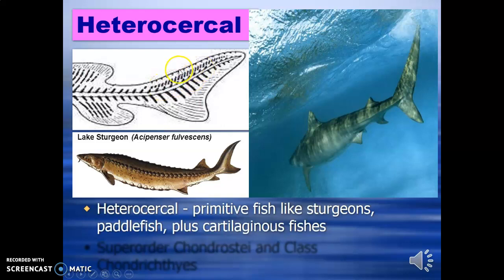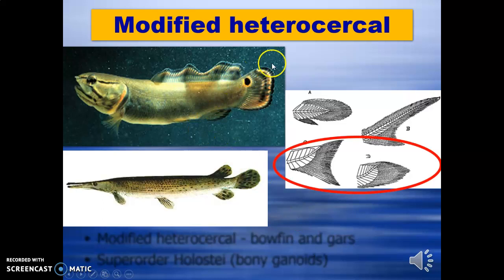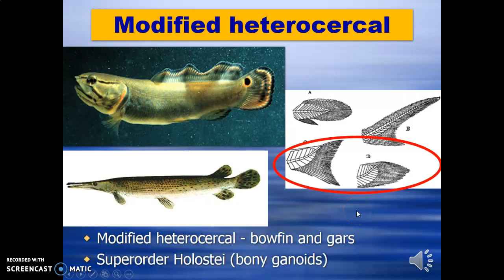Primitive fishes like sturgeon and paddlefish, which are cartilaginous, show the heterocercal tail where the tail lobe is extended towards the dorsal end, while the ventral lobe is shorter — examples include superorder Chondrostei and subclass Chondrichthyes. Modified heterocercal is also seen — here the tail bone is extended towards the top region of the tail, while the ventral region is shorter. This structure is found in bowfins and gars — superorder Holostei and bony ganoids.